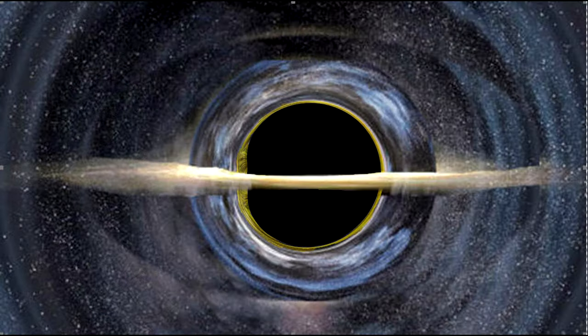This black hole has the remnants of an accretion disk that is no longer feeding the black hole. If the disk were not gravitationally lensed, the black hole should have looked like this.